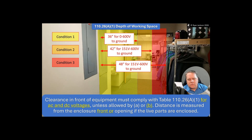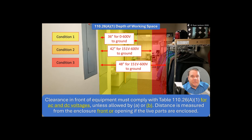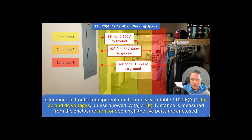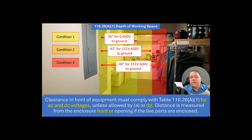AC and DC were both added explicitly. You could argue that because it didn't previously specify AC or DC it applied to both regardless, but now it specifically says AC and DC. Clearance in front of equipment must comply with Table 110.26(a)(1) for AC and DC voltages, unless allowed by A or B. The numbers don't change.